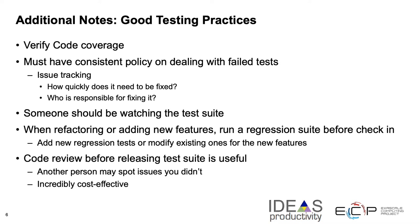You must have consistent policies for dealing with failed tests, which come from things like issue tracking. How quickly does the code need to be fixed, and who is responsible? For example, if an error has been found in an obscure part of the code that only one particular type of simulation needs and no one is currently running that simulation, it may be possible to delay attending to that fault. Whereas if the fault affects an ongoing science campaign or users in an immediate way, that error needs to be fixed immediately. Someone should be watching the test suite and ensuring these decisions about errors are made in a timely fashion.